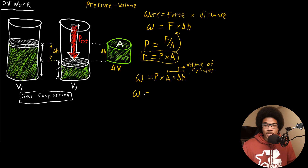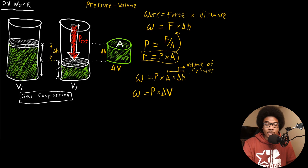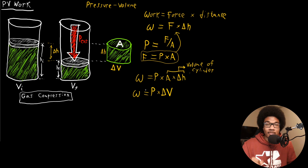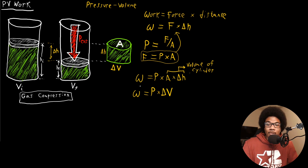So the work is equal to pressure times the change in volume. We now have work defined in terms of two state variables for gases that we're very familiar with: pressure and volume. We also need to make sure this definition gels with our sign conventions — that work done on the system is positive, and work done by the system is negative.